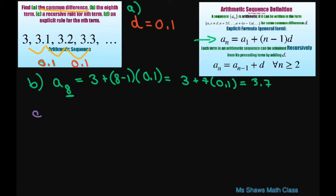For C, write a recursive rule. Well this is a formula here, so you just write A sub n equals A sub n minus 1 plus your common difference. That one's easy. So all this says is that your term you're looking for is going to be the previous term plus 0.1.